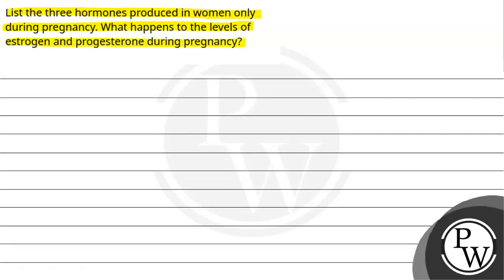Question में पूछ रहे हैं कि कौन से तीन hormones होते हैं जो की सिर्फ प्रेगनेंसी में ही women में होते हैं, and estrogen and progesterone के levels का क्या होता है? So the key concept here is pregnancy.